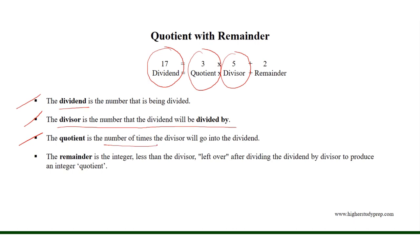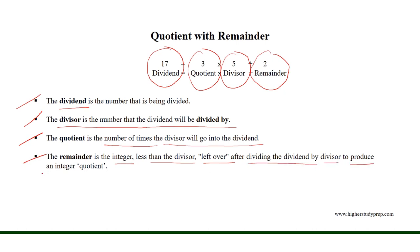The quotient is the number of times the divisor will go into the dividend. And the remainder is a leftover, less than the divisor, after dividing the dividend by the divisor to produce an integer called the quotient.